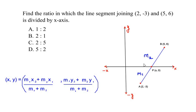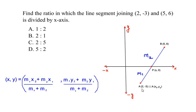Now m₁ and m₂ are the ratio we need to find. Let us take point A as (x₁, y₁). So here x₁ becomes 2 and y₁ becomes negative 3. And B (5, 6), let us take it as (x₂, y₂). So here x₂ is 5 and y₂ is 6.